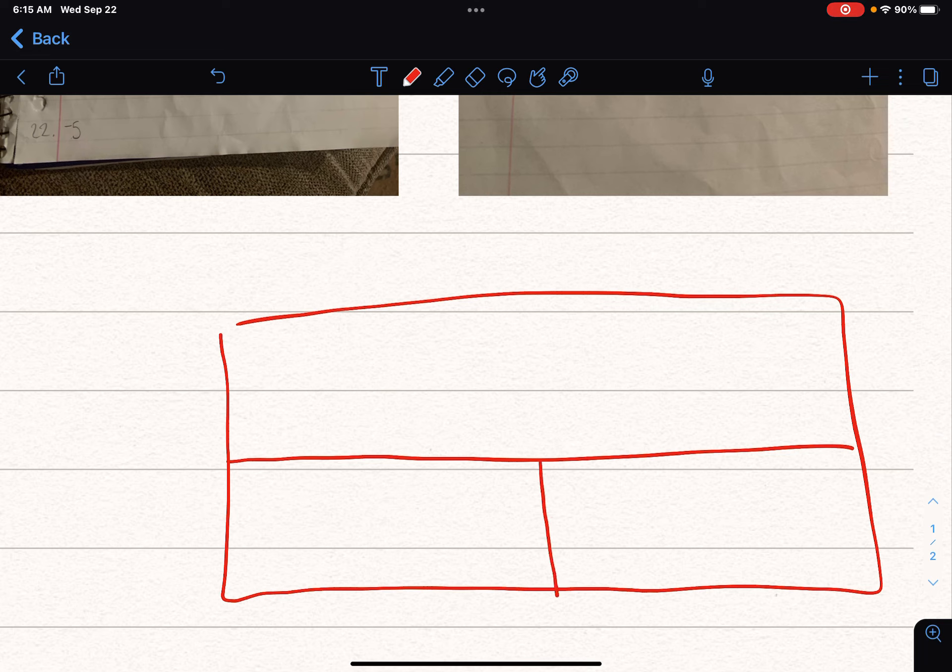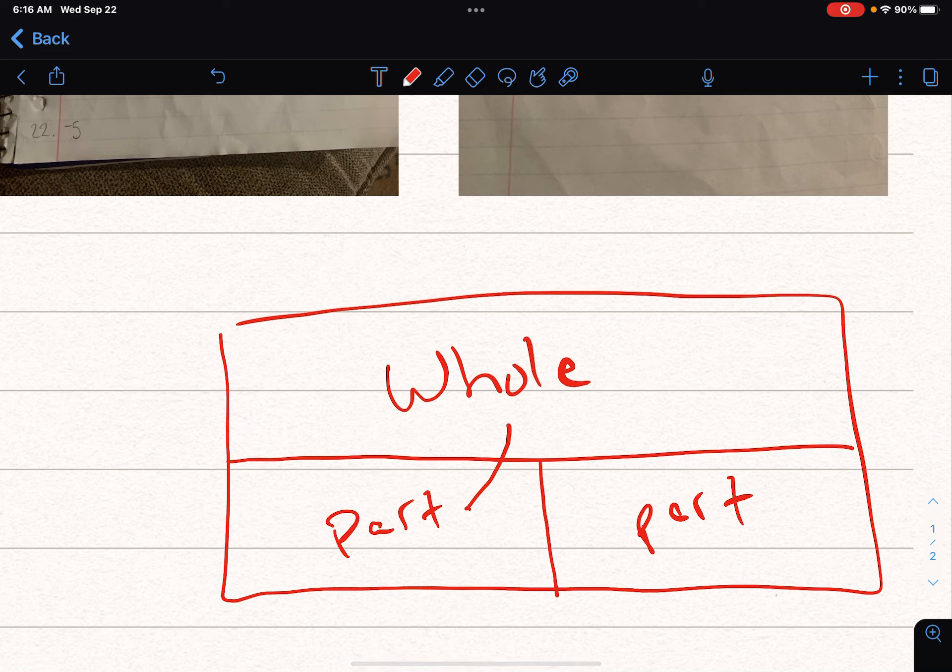So let's say that the top is going to be your whole number. And then both of these down here are going to be part. And each part should equal the whole, right?